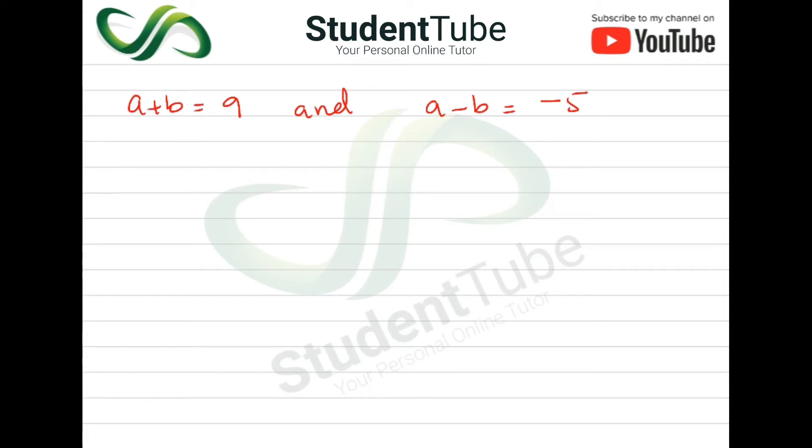If A plus B is 9 and A minus B is minus 5, what is the value of 4AB? So simple, we will put formula.